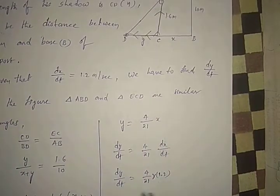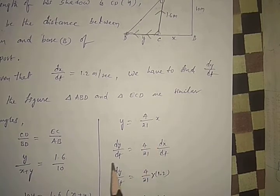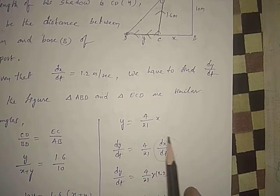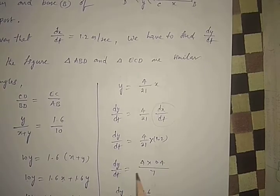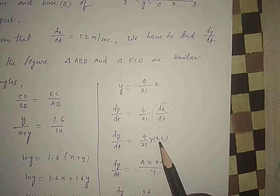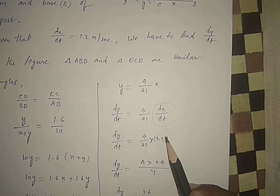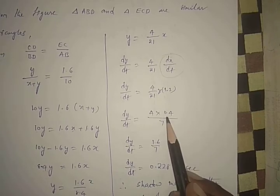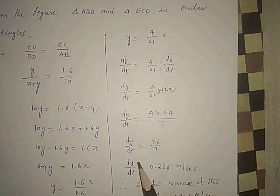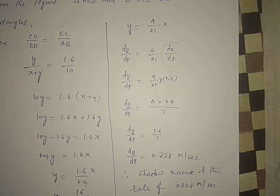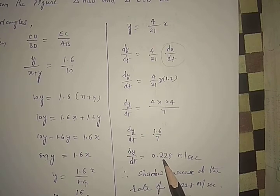Differentiating with respect to T on both sides: dy/dt = 4/21 · dx/dt. We know dx/dt = 1.2 meters per second. So dy/dt = 4/21 × 1.2 = 4 × 0.4/7 = 1.6/7 ≈ 0.228 meters per second. Therefore the shadow will increase at the rate of 0.228 meters per second.